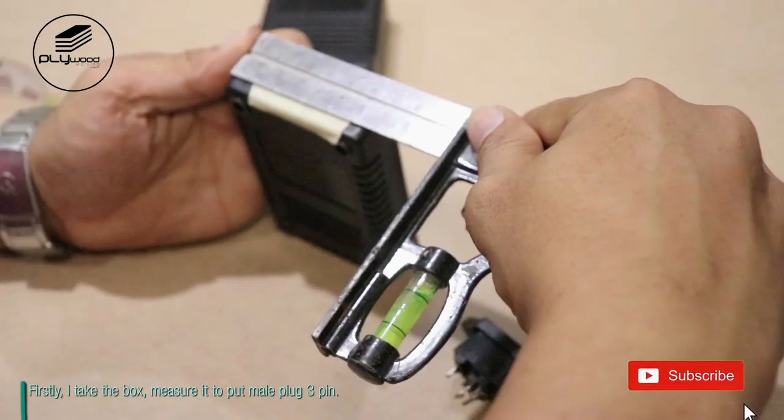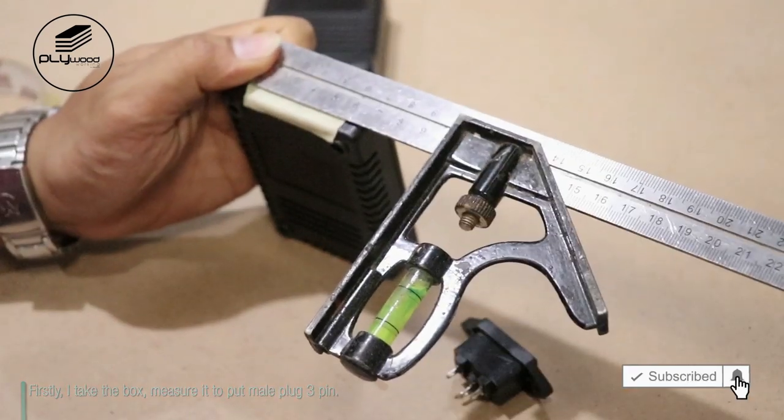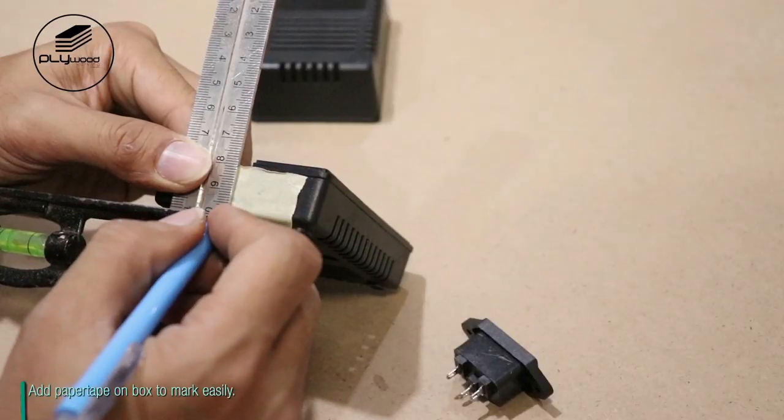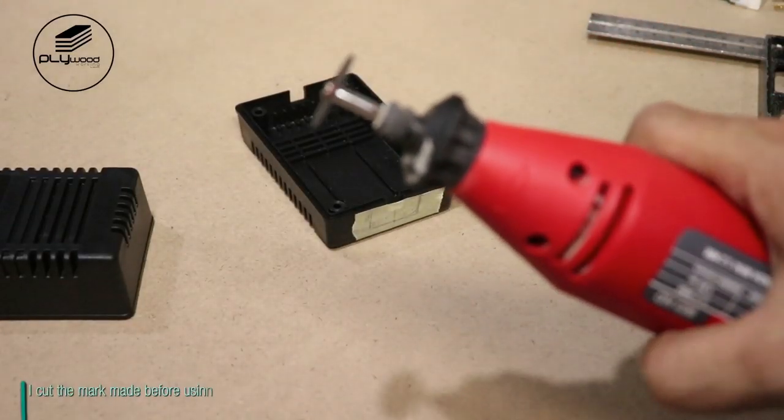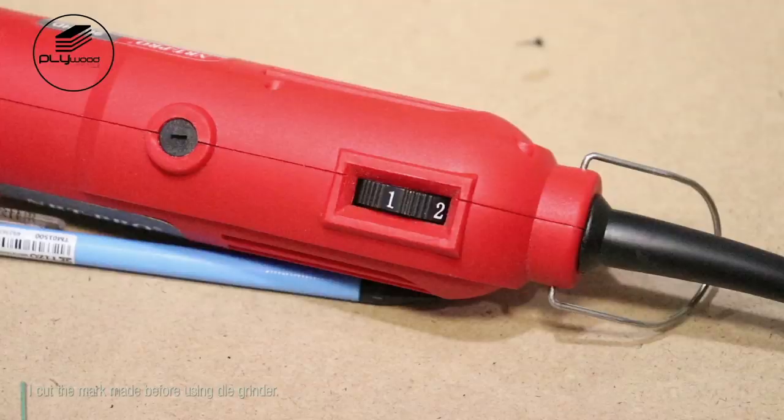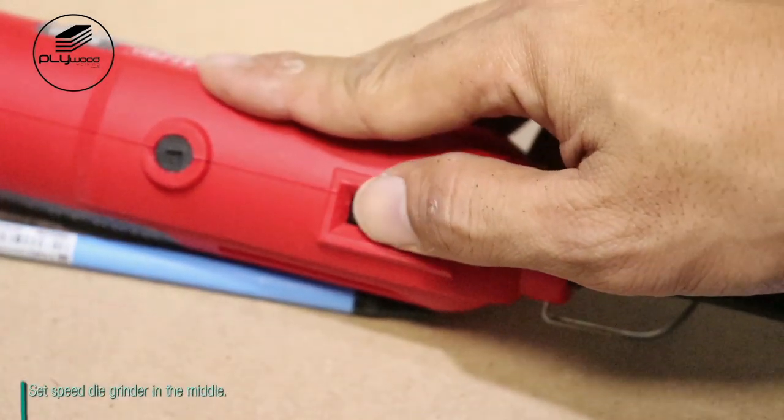Firstly, I take the box and measure it to put the male plug 3 pin. Add paper tape on the box to mark easily. Use the male plug as a template. I cut the mark made before using a die grinder. Set the die grinder speed in the middle.